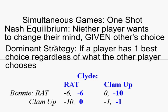Let's look at this table. This is an example of a famous game called the prisoner's dilemma. We have two players, Bonnie and Clyde, in a one-shot simultaneous game. Simultaneous means these two players make their choice at the same time — without knowing what the other person has done. Bonnie makes her choice without knowing what Clyde did, and Clyde makes his choice ignorant of what Bonnie did.